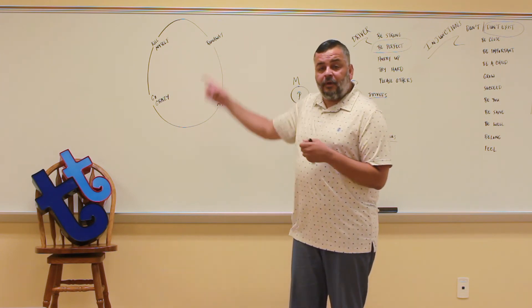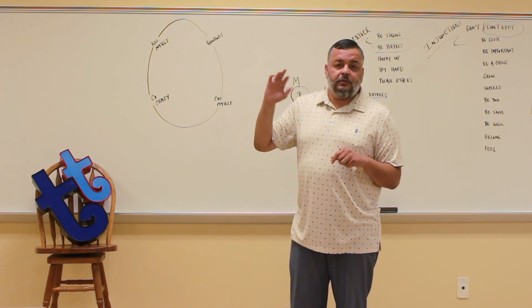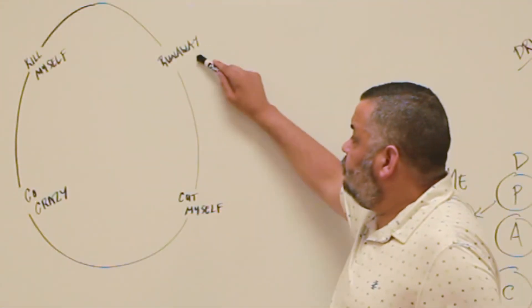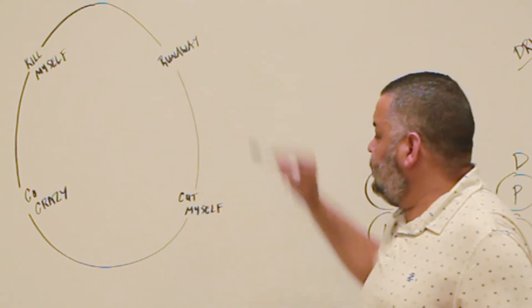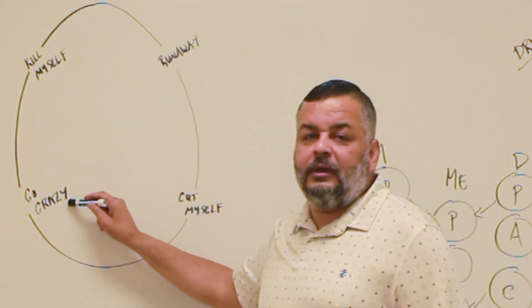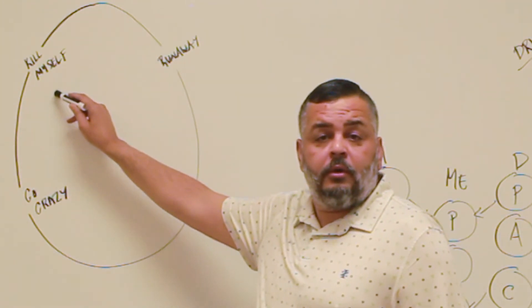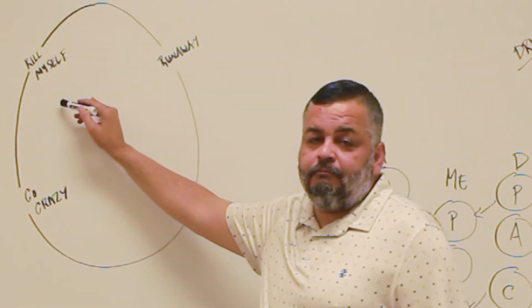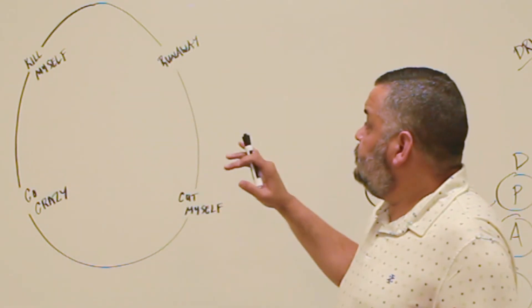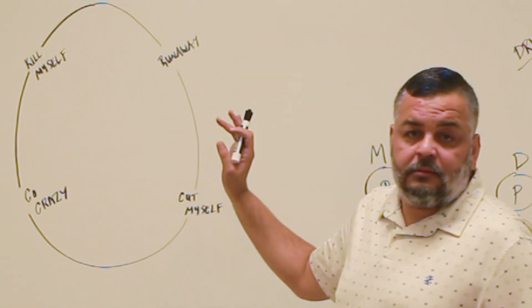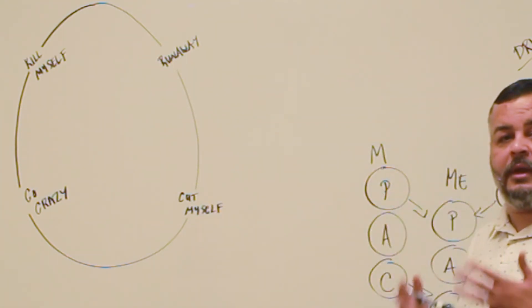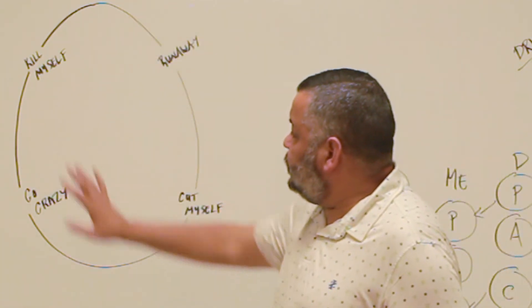Now in transactional analysis we believe that people under stress will create what we call negative creative solutions on how to exit life. We can run away, we can cut ourselves, we can go crazy, or we can kill ourselves or get someone to kill me. And remember this is a negative creative strategy to get away from the stress in some form or fashion.